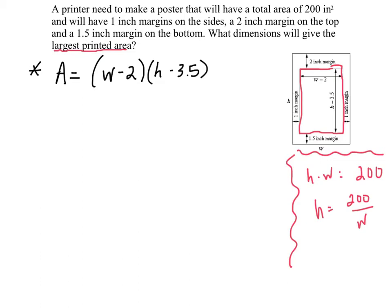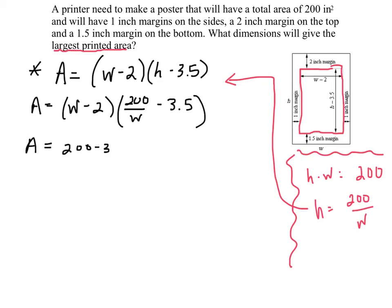Now let's use our constraint back up in here. Area is going to be equal to w minus 2, and h I'm going to replace with 200 over w, minus 3.5. Let's multiply this out.